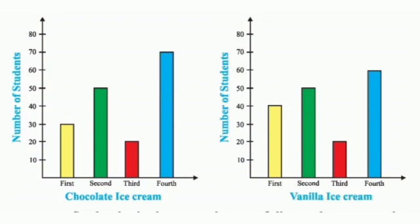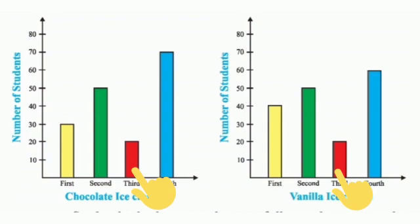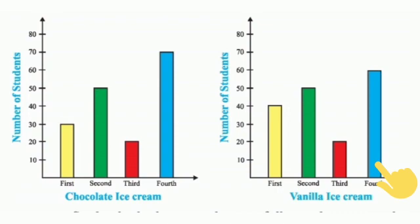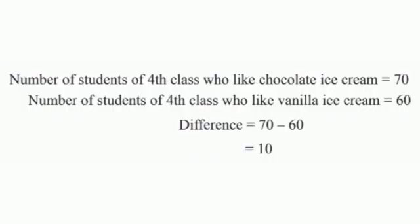Now, which class has the same number of students who liked both vanilla and chocolate ice cream? The number of second class students and the number of third class students are the same in both bar graphs. So, our answer is second and third class. Now, what is the difference in preference for both flavors among fourth class students? In the first bar graph, 70 fourth class students liked chocolate ice cream, and in the second bar graph, 60 liked vanilla ice cream. So, the difference is 10.